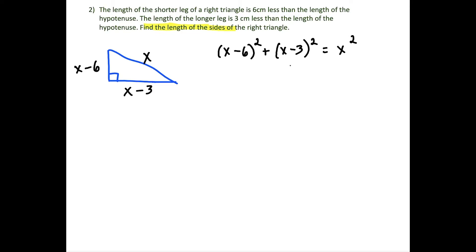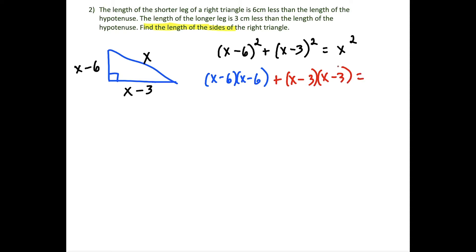Using the Pythagorean theorem — leg squared plus leg squared equals hypotenuse squared — we write: (x minus 6) squared plus (x minus 3) squared equals x squared. We expand by multiplying (x minus 6)(x minus 6) and (x minus 3)(x minus 3).